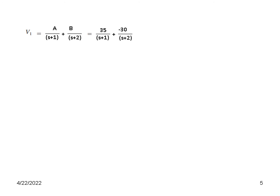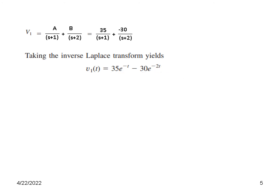So we have V1 in the S-domain. Taking the inverse Laplace transform gives the time-domain result: v1(t) equals 35 e raised to the power minus t, minus 30 e raised to the power minus 2t, multiplied by the unit step function u(t). This confirms the solution is valid for t greater than 0.